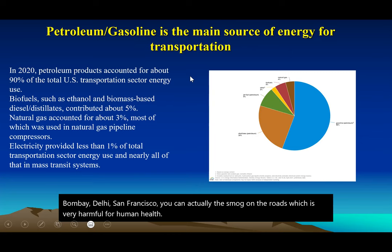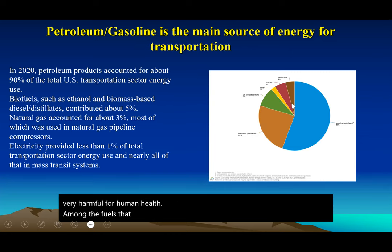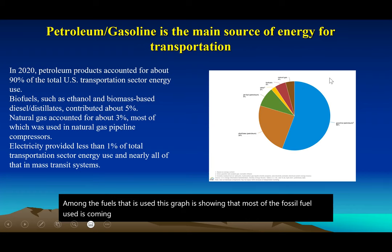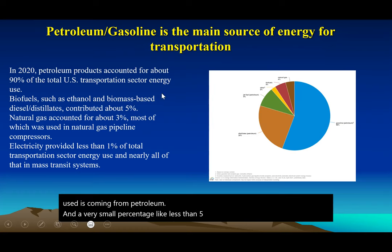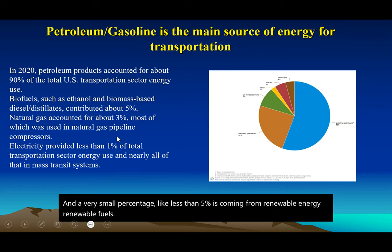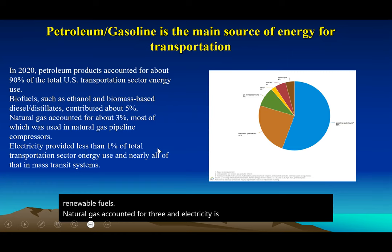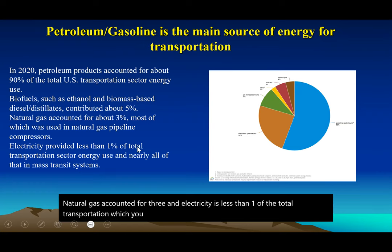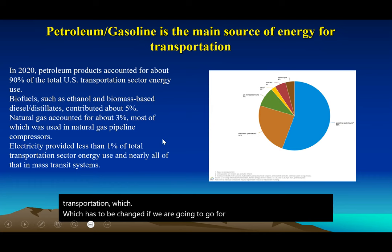This graph shows that most of the fossil fuel used in transportation comes from petroleum. A very small percentage — less than 5% — is coming from renewable fuels. Natural gas accounts for about 3%, and electricity is less than 1% of total transportation energy, which has to change if we are going to reach a zero-carbon economy.